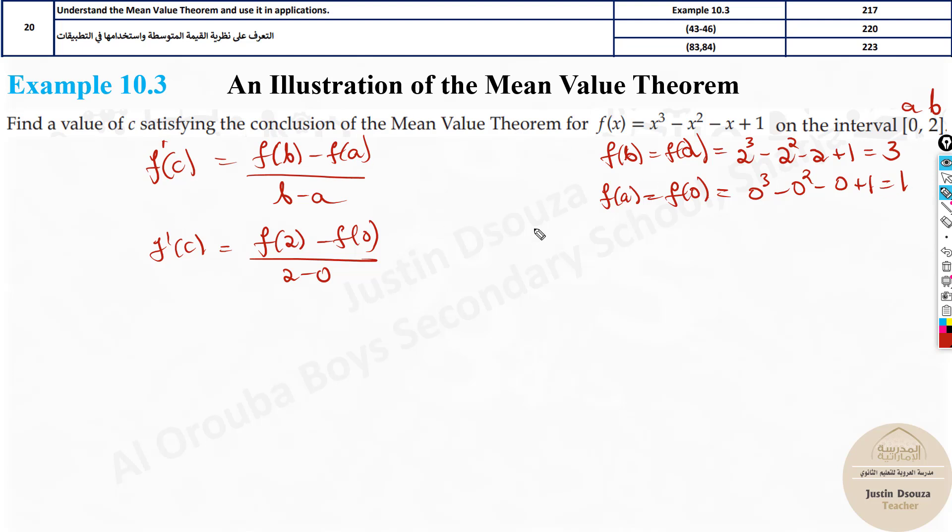Now, what about f dash of c? First, let's write what is c? f of c is c cubed. Wherever x is, they just put c. What do we do? We just substitute these values instead of x, right? Same thing. Now, here then, let's derive it. f dash of c would be derivation of this. When you derive it, you will get 3c squared minus 2c minus 1. And this 1 will be 0 when you derive it. This is the answer.